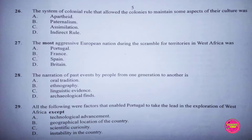Question 26. The system of colonial rule that allowed the colonies to maintain some aspects of their culture was: A. Apartheid, B. Paternalism, C. Assimilation, D. Indirect rule. The correct answer to this question is D. Indirect rule.